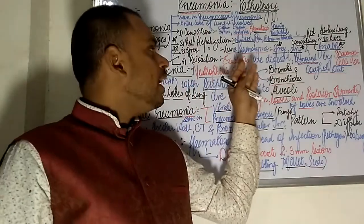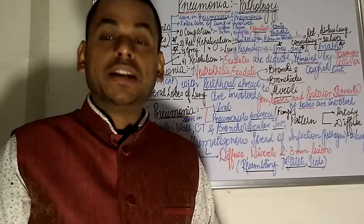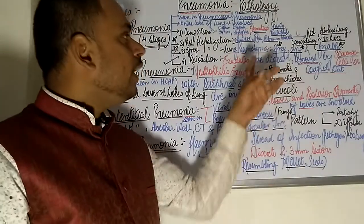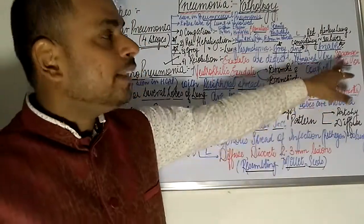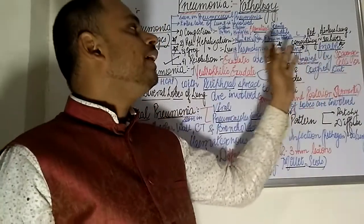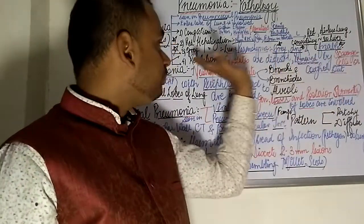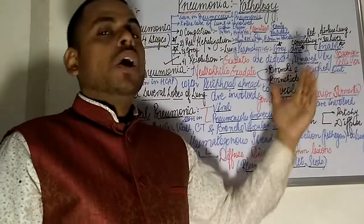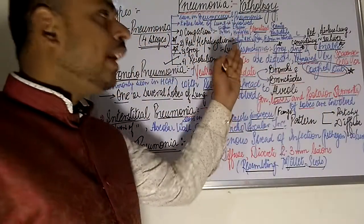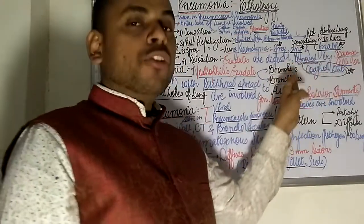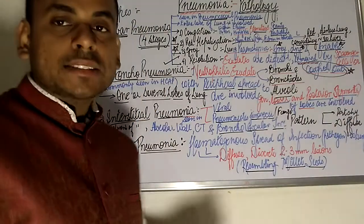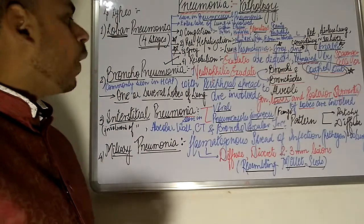The fourth and final stage is the stage of resolution. In this stage, the exudates of neutrophils that have accumulated in the alveoli are digested and removed by scavenger cells, particularly macrophages. The neutrophilic exudates are either digested and removed by macrophages or coughed out.